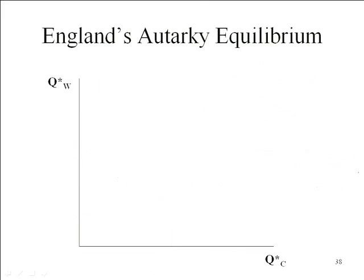Pretty straightforward. We know that England can produce more wine than they can cloth. So here's our production possibilities frontier, which of course is scaled the same as our ISO value line, and will also be the same as our budget constraint. Now, we need to put our country indifference curve on here.